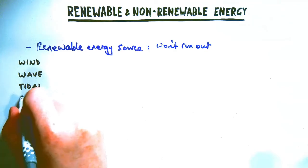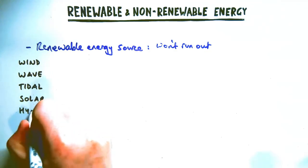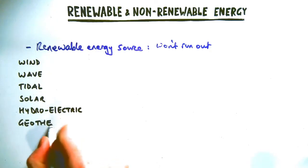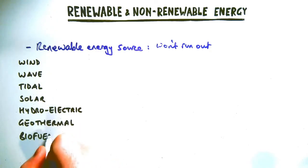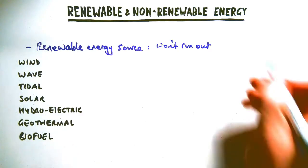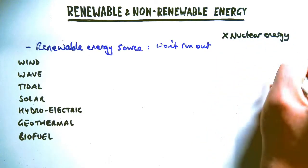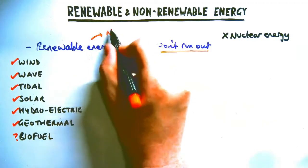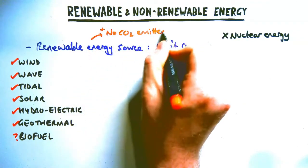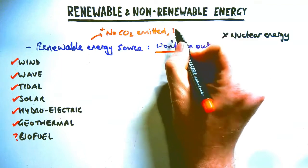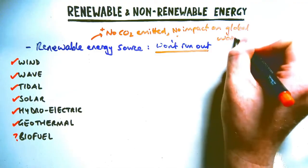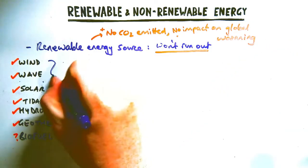Renewable energy sources won't run out, and there are seven of them. You need to know the pros and cons of each. The seven are: wind, wave, tidal, solar, hydroelectric, biofuel, and geothermal — nuclear energy is not included and is not a renewable source. They all share a big advantage: contrary to fossil fuels, they don't emit CO2, so they don't contribute to climate change or global warming.